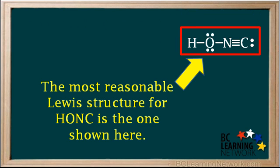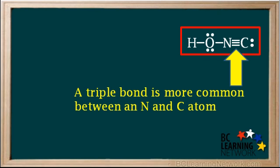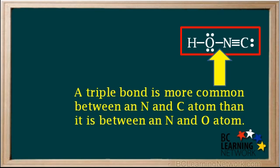So we can finish by saying the most reasonable Lewis structure for HONC is the one shown here. In general, it's good to know that a triple bond is more common between an N and C atom than it is between an N and O atom. Thank you.